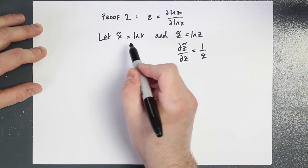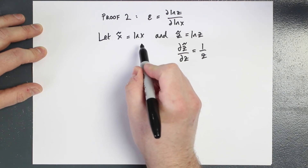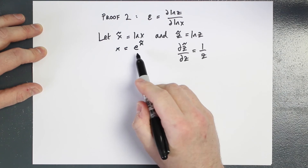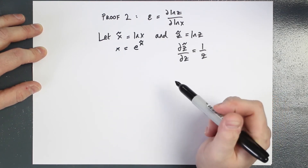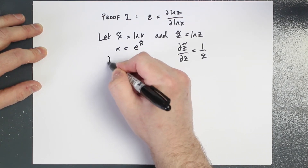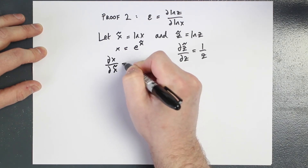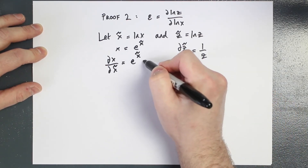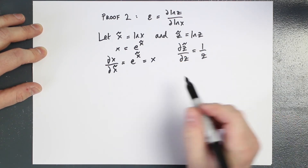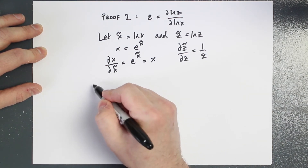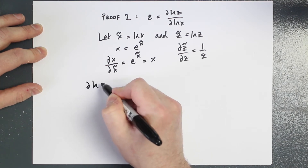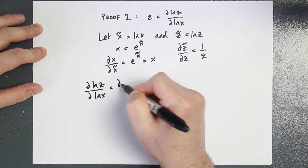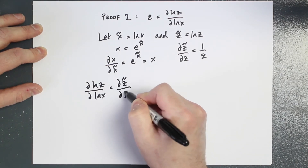If x-tilde equals log x, then x equals e to the power x-tilde, because the exponential is the inverse of the natural log. So the partial derivative of x with respect to x-tilde is e to the x-tilde, which equals x. Now let's evaluate the partial derivative of log z with respect to log x, which using our change of variable is the partial derivative of z-tilde with respect to x-tilde.